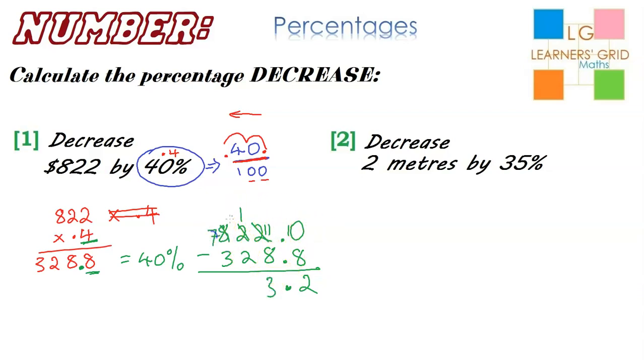1 minus 2, we can't do it, so borrow yet again. 11 minus 2, we can do that, that's a 9. 7 minus 3 is 4. So we're nearly finished now.